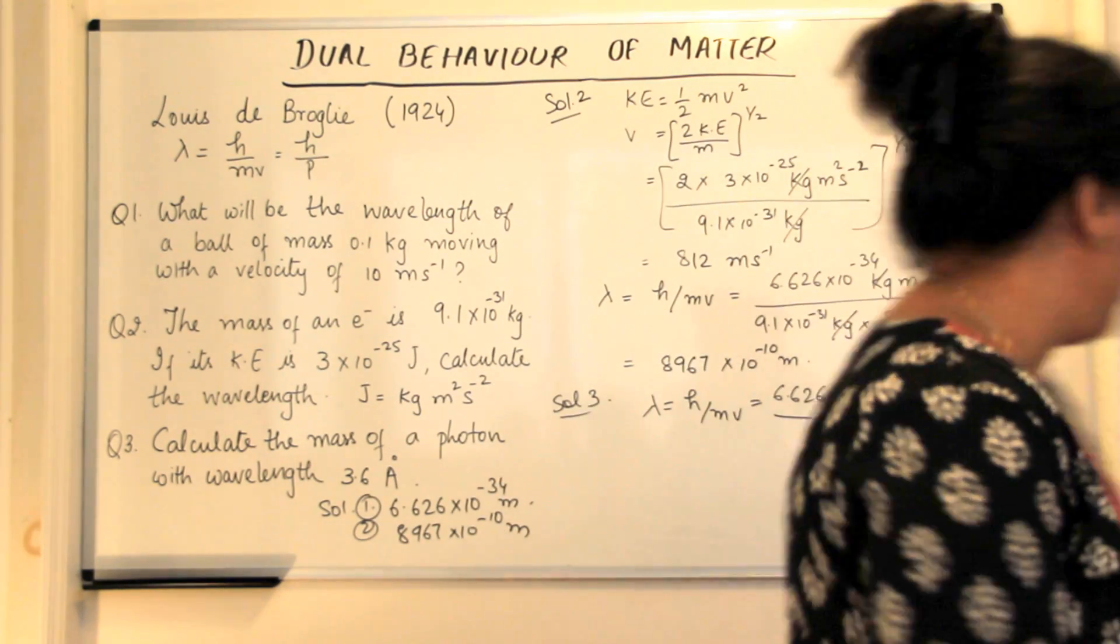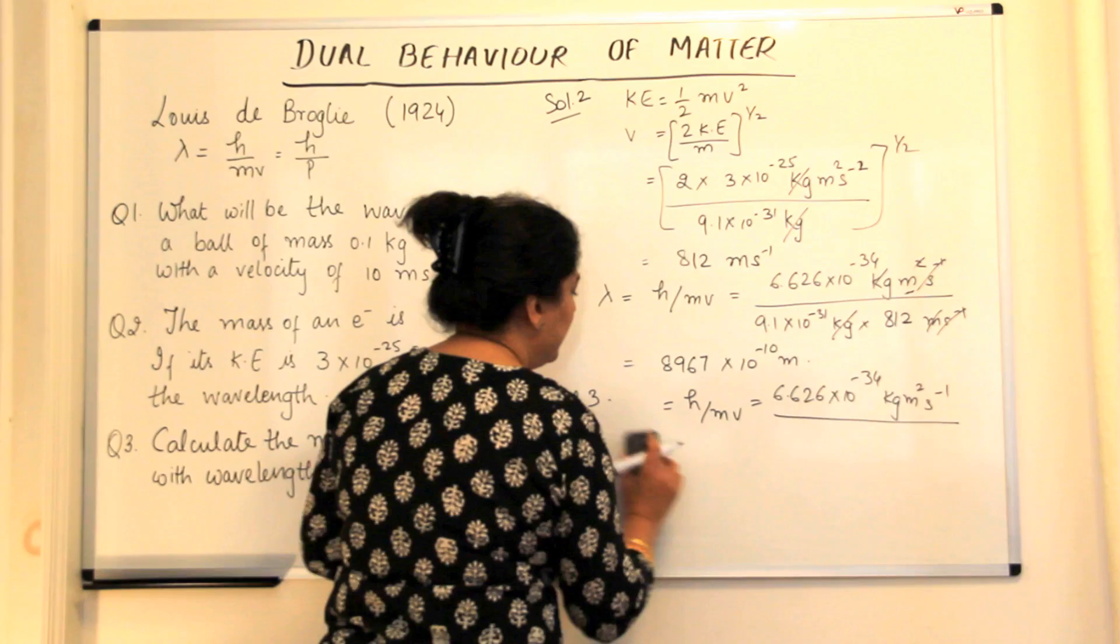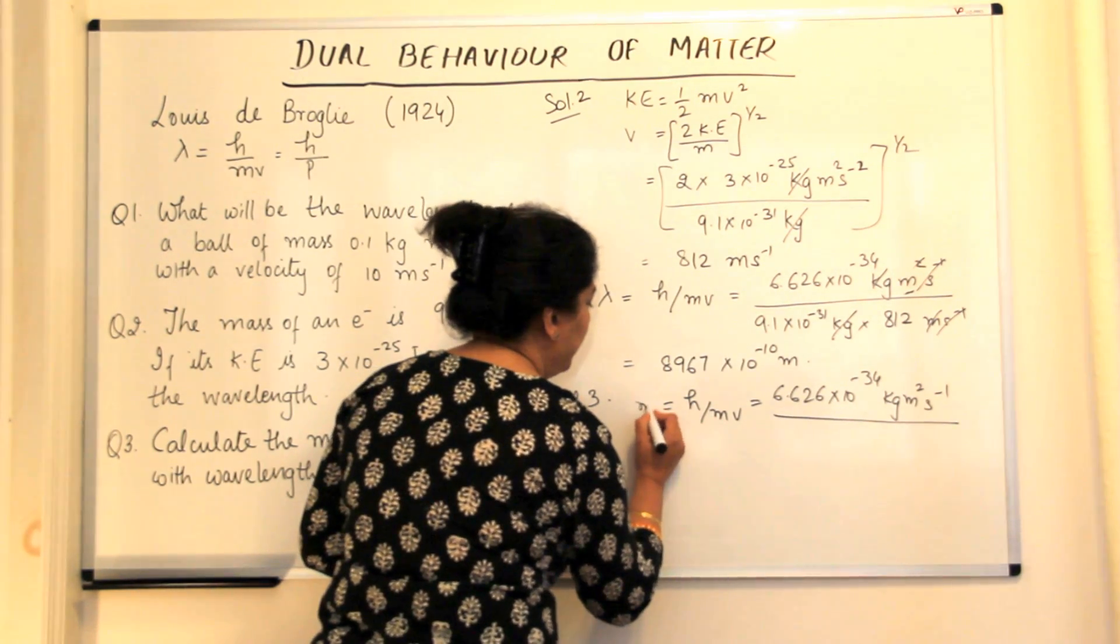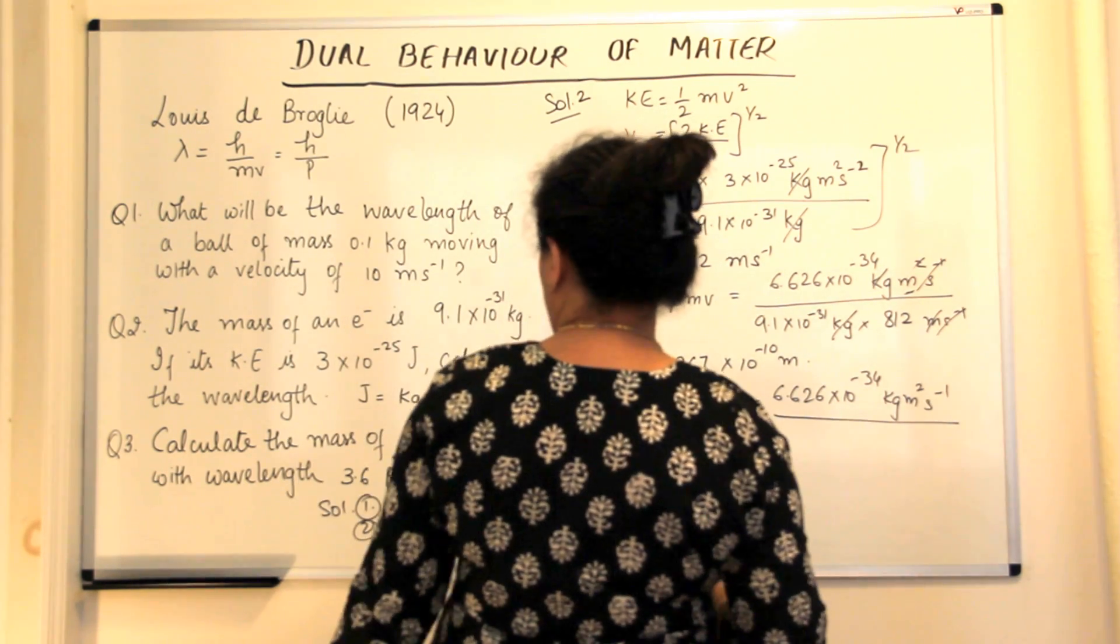you have to calculate the mass of a photon. Not the, therefore the mass would be, mass would come up here and wavelength would come down here. And we've been given the wavelength.